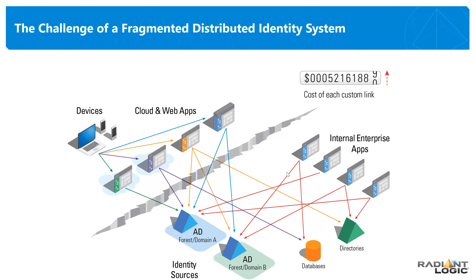Even if they could, the number of connections you would need to manage every time you brought on a new application or added a new data source would grow exponentially. The application would have to understand how to identify a user, what attribute to look for, how to authenticate — whether with a credential, a PIV card, or Kerberos — how to retrieve profile attributes or group membership required for enforcing authorization, and how to adjust in the future as data silos evolve through mergers, acquisitions, migration, and consolidation efforts. So this kind of system clearly doesn't scale well.